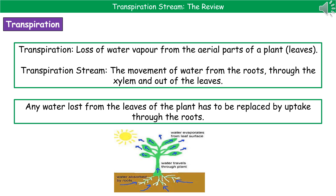Be careful not to mix up the word transpiration with the transpiration stream. Any water that plants lose through the leaves has to be replaced by uptake through the roots. So when we're talking about how water gets into the plant, it's absorbed through the roots.